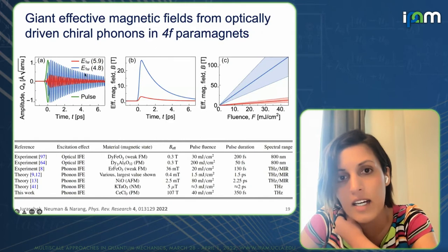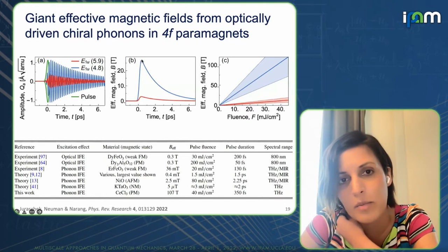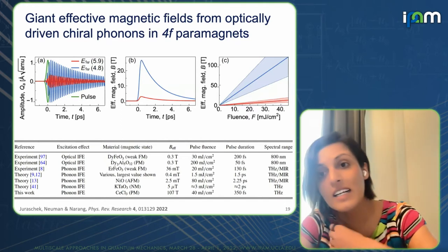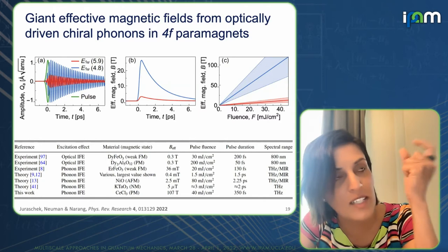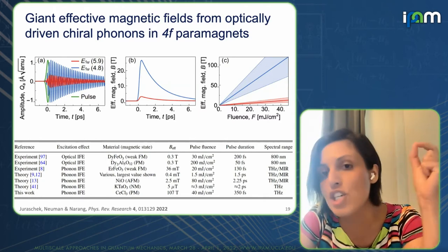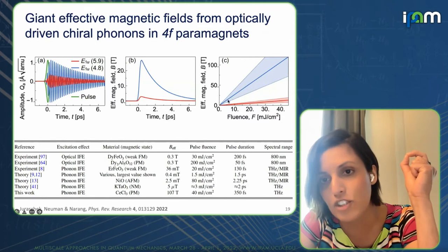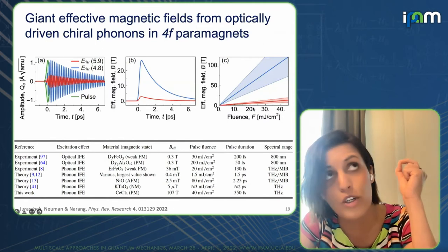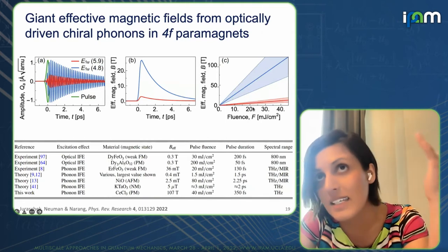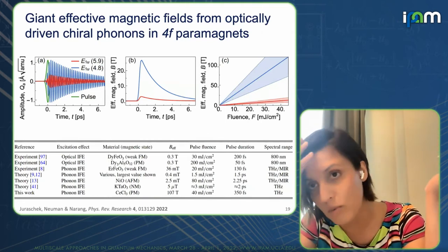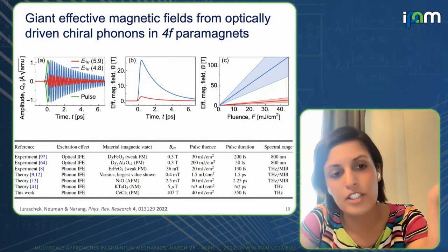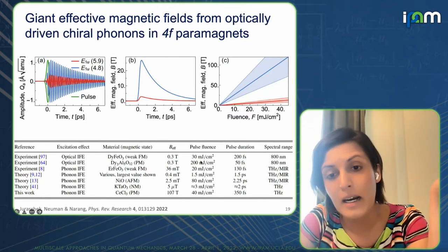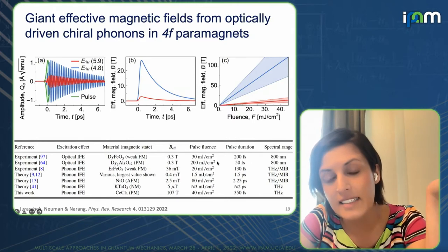The 4.8 THz mode gives a very large effective magnetic field — in Tesla, a very large number. Even folks working on the AMO side have barely gotten to such numbers. In contrast, exciting just the 5.9 THz mode gives almost nothing. There are particular modes where you get very large spin-phonon coupling and appreciable effective magnetic fields. We've also done fluence-dependent studies — you're not driving so hard that you're melting the system; this is within ranges an experimentalist could actually achieve.